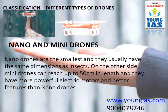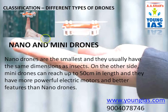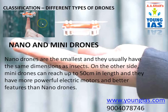Classification of different types of drones. Classification of drones may seem complex due to the fact that there are a lot of different models with different features, size, and price. The only way we can classify them is by size. Nano drones are the smallest, usually having the same dimensions as an insect. Mini drones can reach up to 50 cm in length and have more powerful electric motors and better features than nano drones.